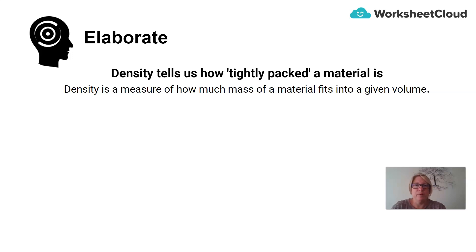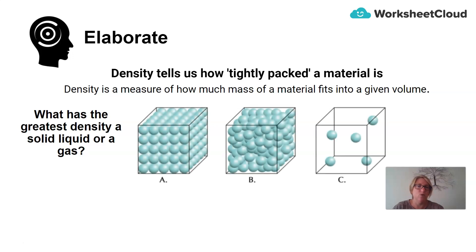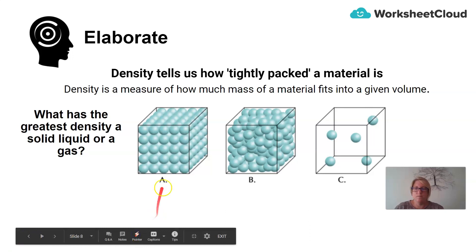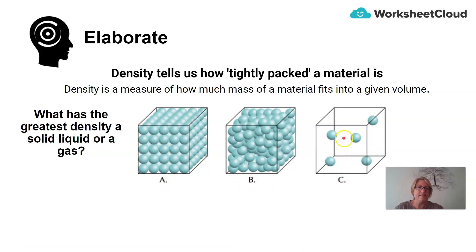To elaborate on this topic, density tells us how tightly packed a material is, and density is a measure of how much mass of a material fits into a given volume. So what has the greatest density? Is it a solid, a liquid, or a gas? A is a solid, B is a liquid, and C is a gas. They both have exactly the same volume, this cube. So the volume in all instances is the same.